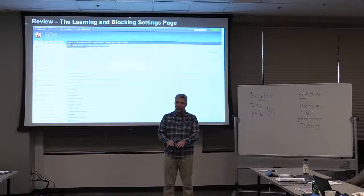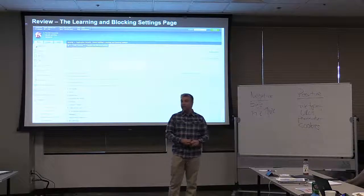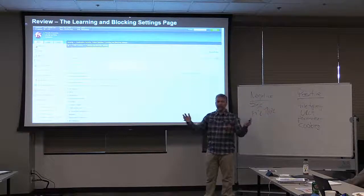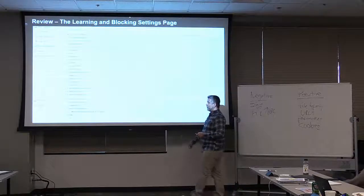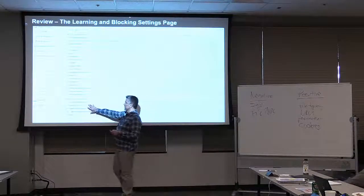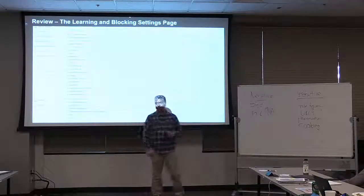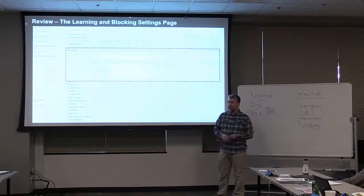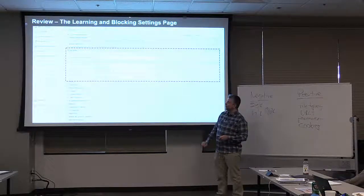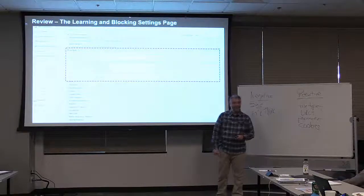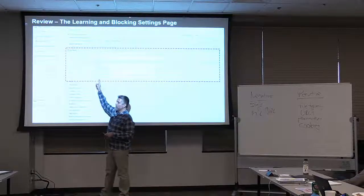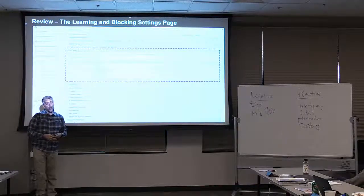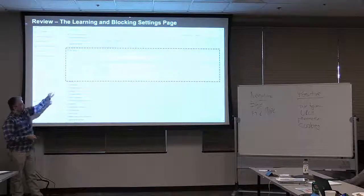If I were to lower those values as we did, now maybe a bad request would have more impact. We did a lot of things on the learning and blocking settings page — you're going to do a lot of things on this page as you play with ASM. We were also playing with trusted IP addresses. You configured the file type learning, and a couple of you saw what happened if we forgot that first drop-down list — we didn't get any learning.